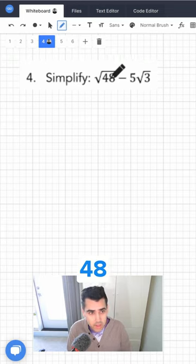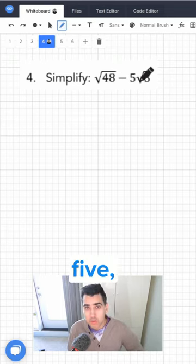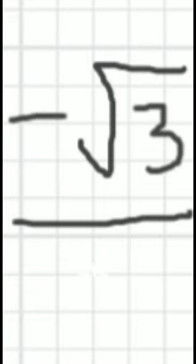Simplify the square root of 48 minus 5 root 3. Here is the answer. It's minus root 3. But if you want to know why, keep watching.